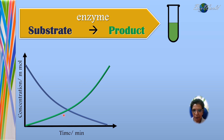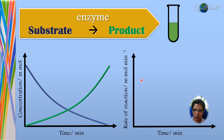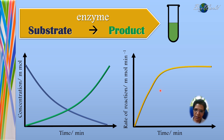We can modify this time-course reaction curve into a rate of reaction curve. That is, we can measure the increase in product every minute. We will then get a graph that shows the rate of reaction increasing over time, but eventually reaching a plateau.